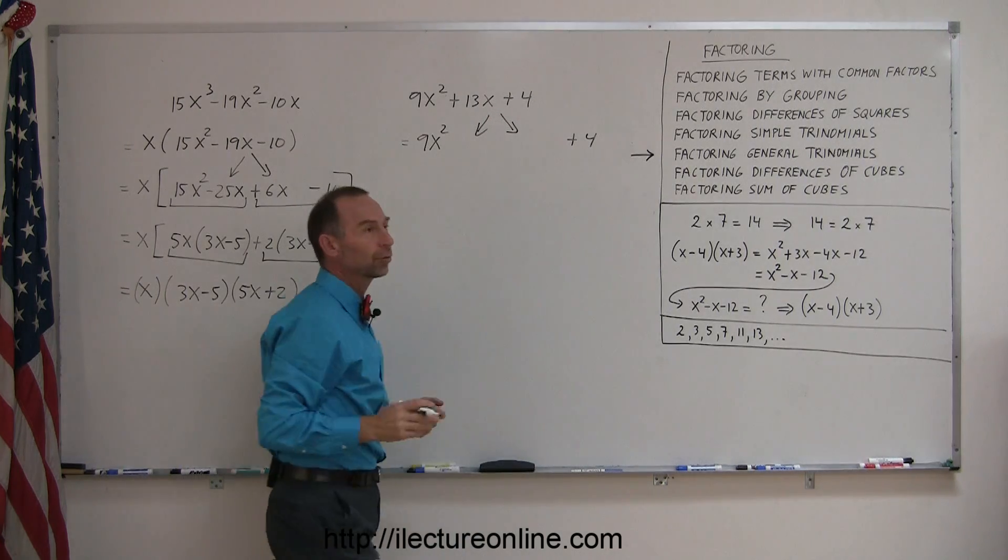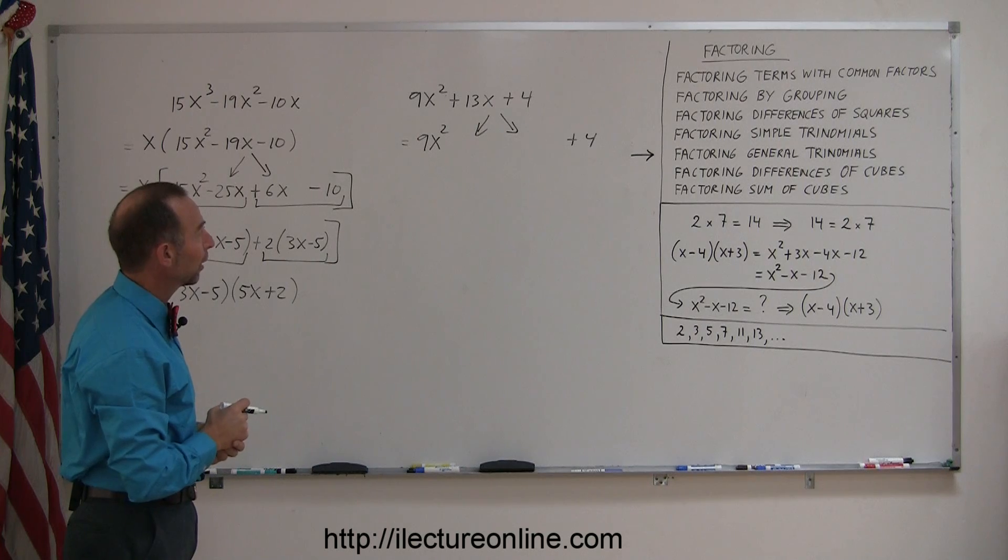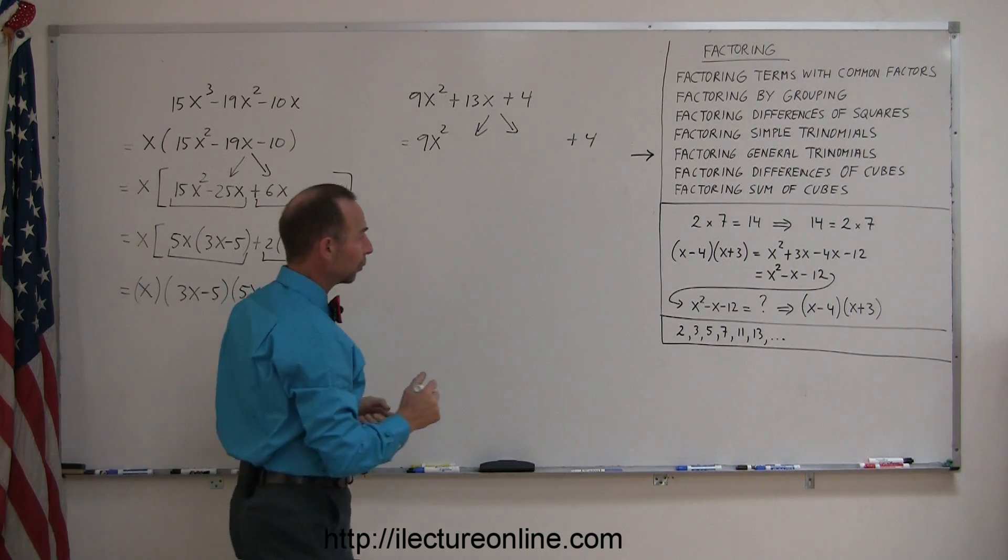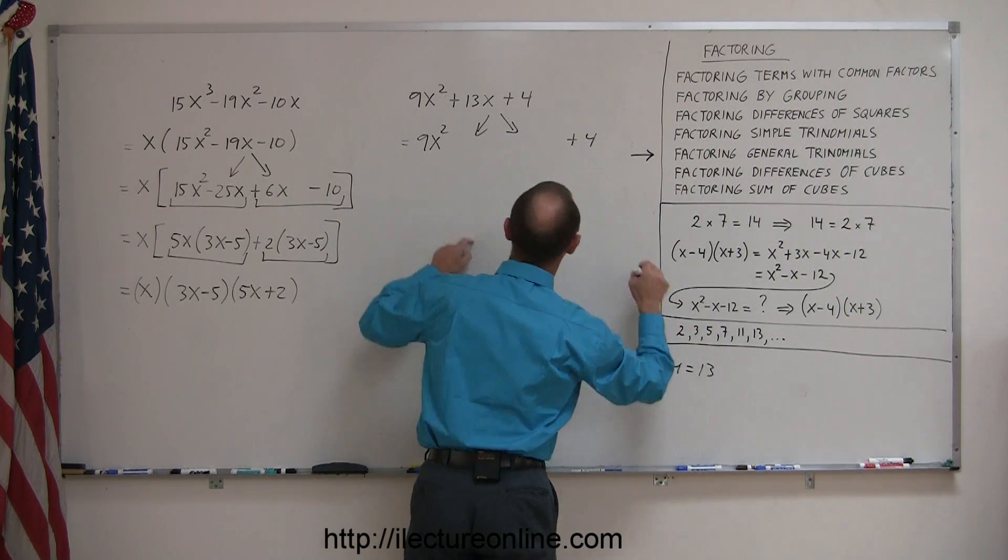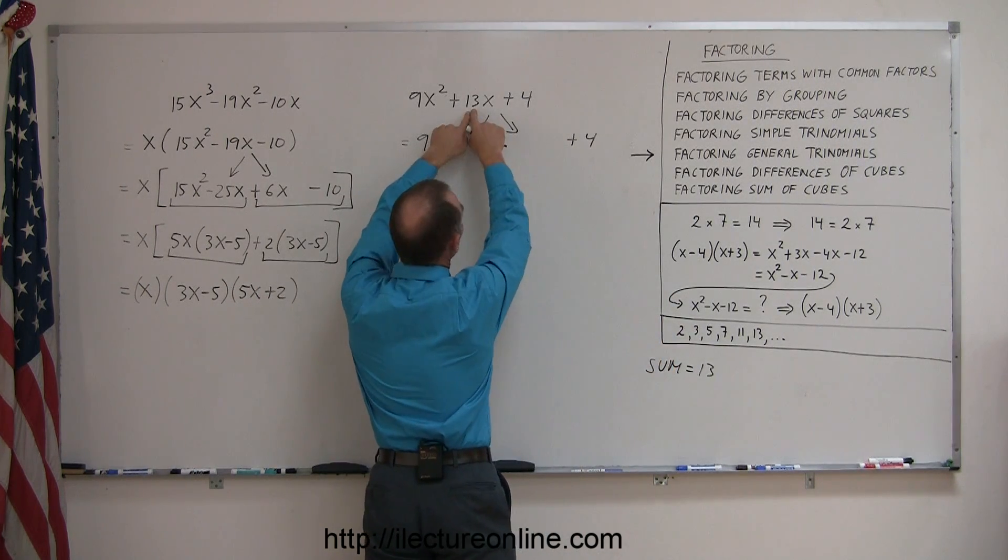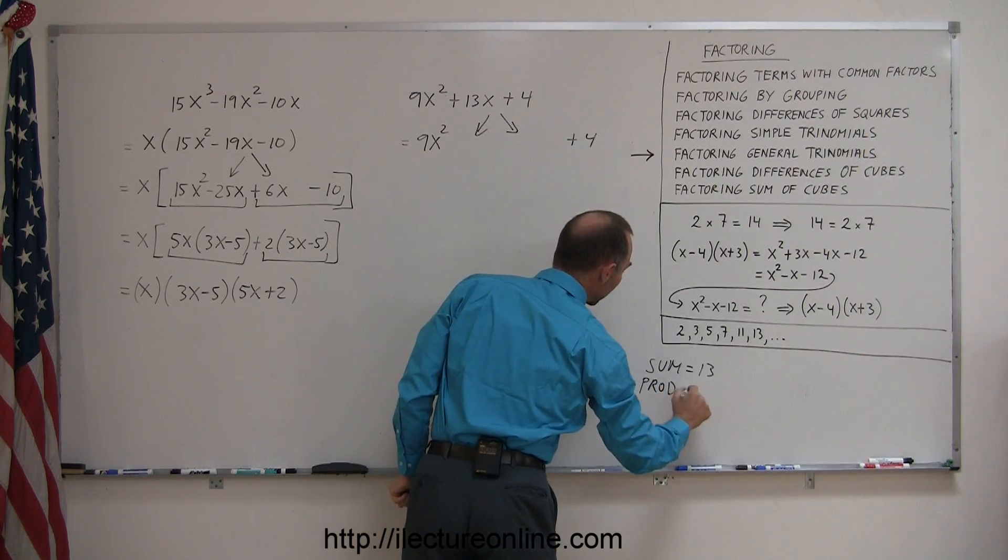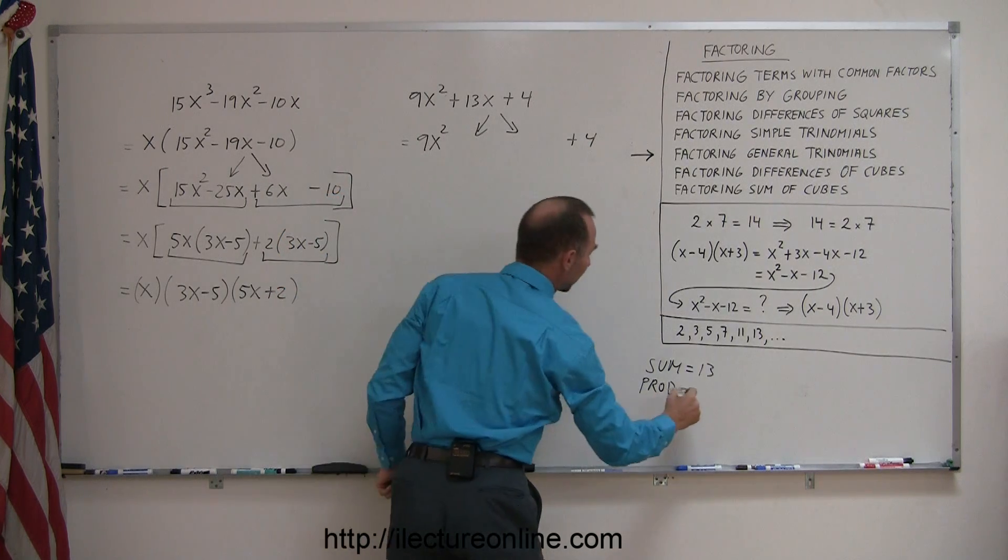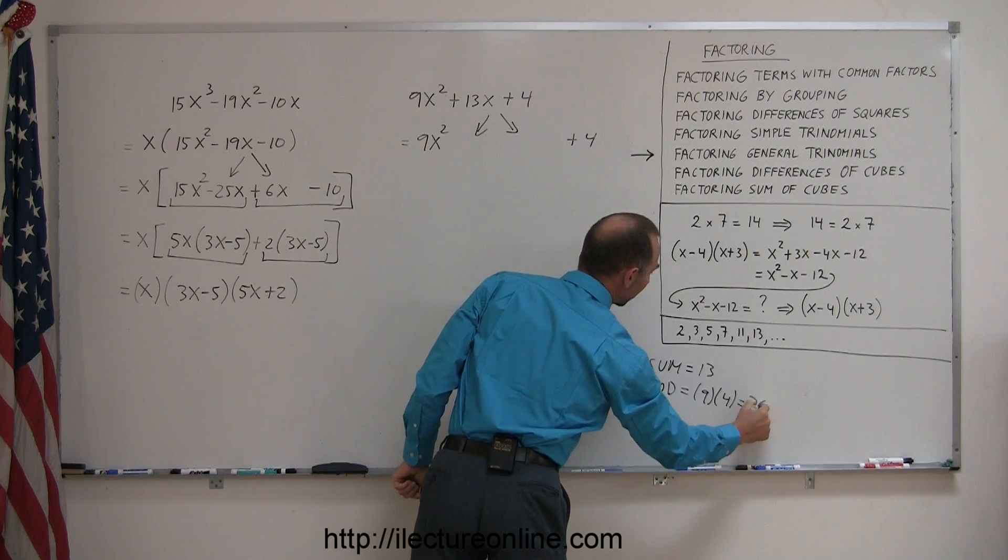So the 13x is going to now be written as a sum of two terms that add up to 13x. The rule is that when you add them together, the sum must equal 13. So whatever the coefficients are here, they must add up to 13. And the product of the two numbers you're looking for equals the product of the outer two numbers. So the product should equal 9 times 4, which is equal to 36.